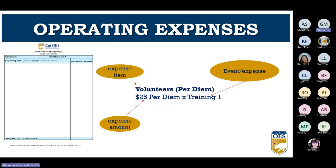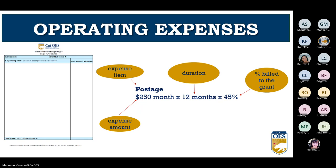For operating expenses, volunteers being charged for per diem or gas mileage should be titled as the volunteer title plus what they're being charged for — for example, per diem and the name or number of training they're attending. For postage: $250 per month multiplied by the duration — in this example 12 months — multiplied by how much the postage will be charged to the grant.